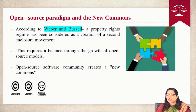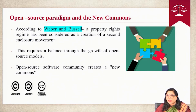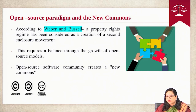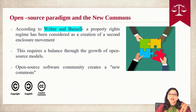According to Weber and Bushel in the article 'The New Commons versus the Second Enclosure Movement,' a property rights regime has been considered as a creation of the second enclosure movement that requires to be balanced out throughout the growth of the open source model. The open source software community creates a new commons — such as the social commons, digital commons or knowledge commons — which act as productive tools giving rise to egalitarian redistribution of intangible assets while allowing human engagement and creation of inventions and solutions. Such creation of new commons also helps in redefining aspects like ownership rather than focusing on rights of exclusion.